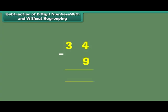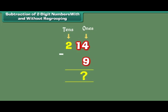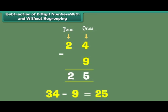What is 34 minus 9? 34 has 3 tens and 4 ones. We want to remove 9 ones. As 9 ones cannot be removed from 4 ones, we regroup 1 ten as 10 ones. Now we have 2 tens and 14 ones. We remove 9 ones from 14 ones. We are left with 5 ones and 2 tens. Therefore, 34 minus 9 is equal to 25.